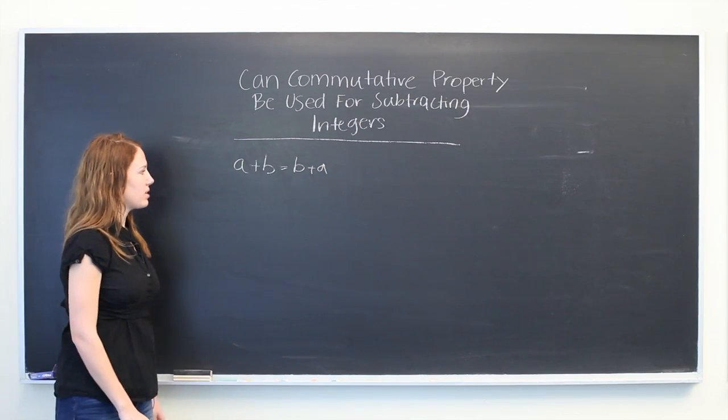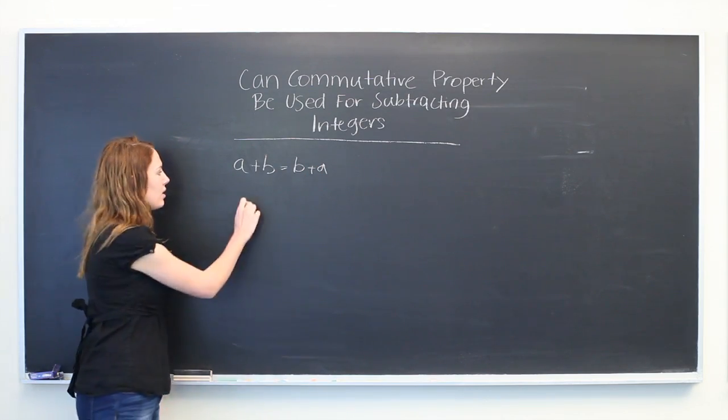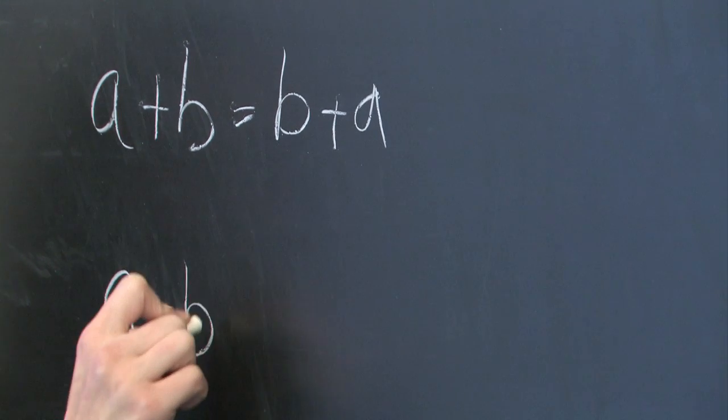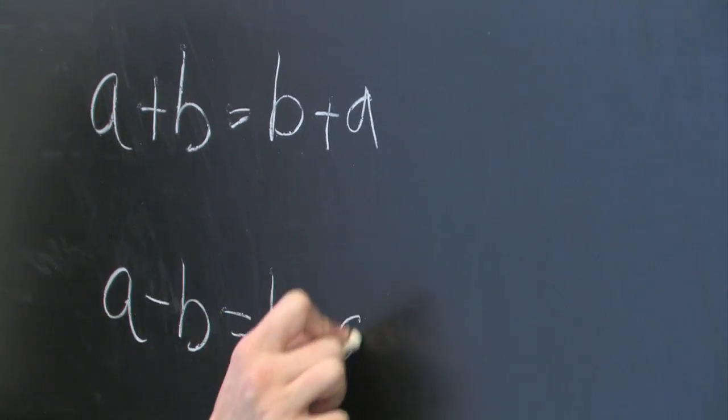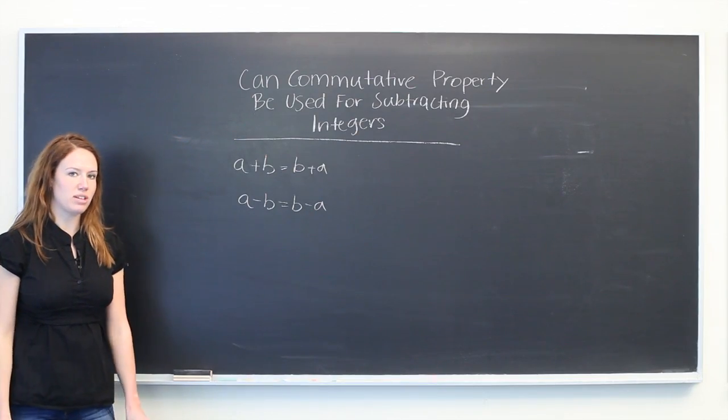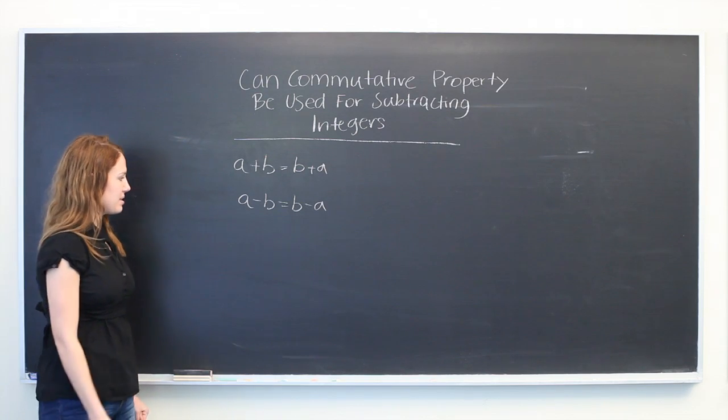So what we're trying to do is figure out whether a minus b is equal to b minus a when a and b are both integers. So let's look at an example.